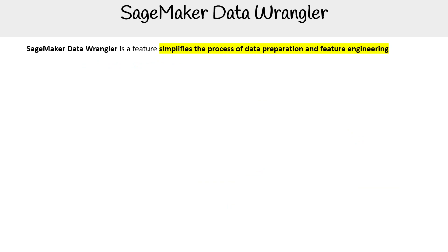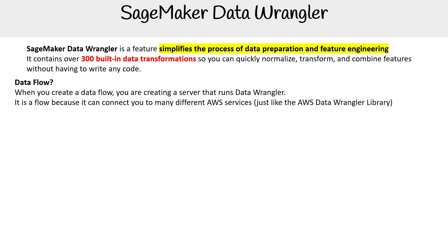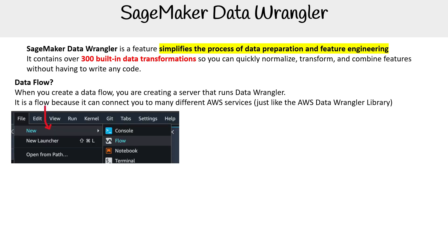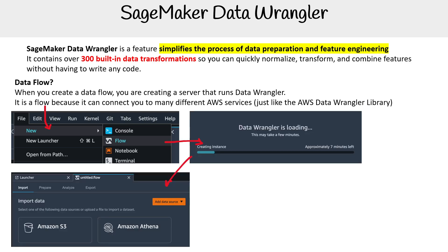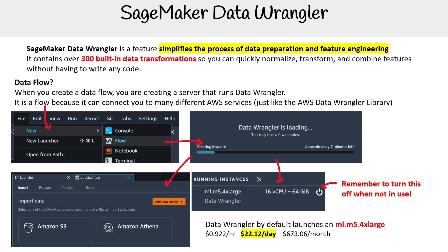SageMaker Data Wrangler is a feature that simplifies data processing. You first create a data flow, then it connects to other services, similar to the AWS Data Wrangler library. This is shown in Studio Classic. You create a flow, set it up, import data, choose options, run it on an instance, and remember to turn it off. It might cost around $22.12 to run it all day.